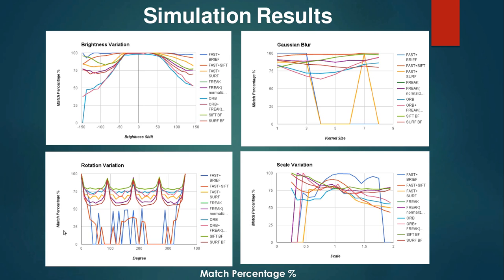The match percentage is consistently good for SIFT with rotation, because SIFT is scale invariant — this is very expected. With scale variation, SIFT again has consistent performance compared to algorithms like FAST and BRIEF which start well but then degrade significantly.